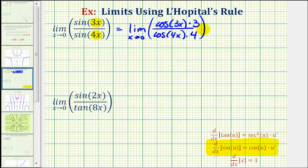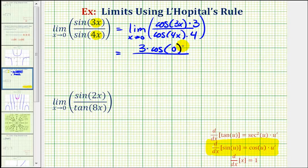Because this quotient function is continuous around x equals zero, we can now determine this limit using direct substitution. Substituting zero for x, we get three times cosine of zero in the numerator, and four times cosine of zero in the denominator. Cosine zero over cosine zero simplifies to one, therefore our limit is equal to three-fourths.